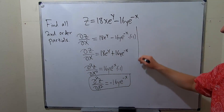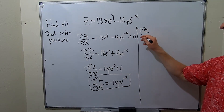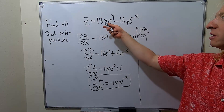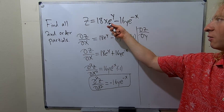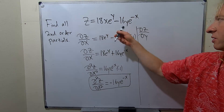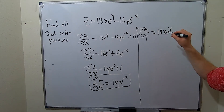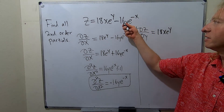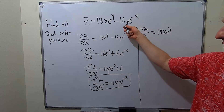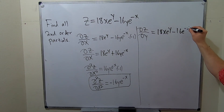Now let's find del z del y. We look at the original function, and now all of the x's are constants. The partial with respect to y: the 18x hangs out as a constant, and the derivative of e to the y is e to the y, so that whole term stays. For the second term, the derivative of y is 1 and everything else stays, so it's minus 16 e to the negative x.